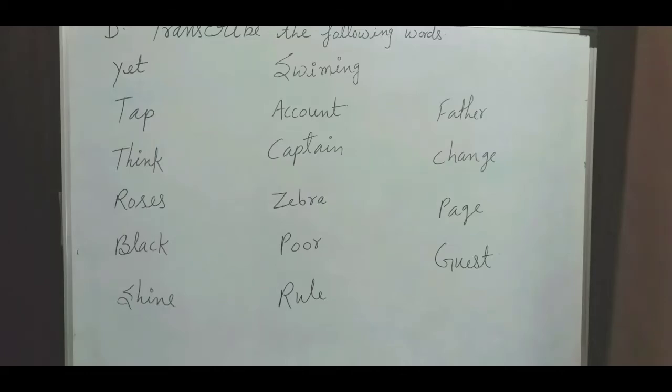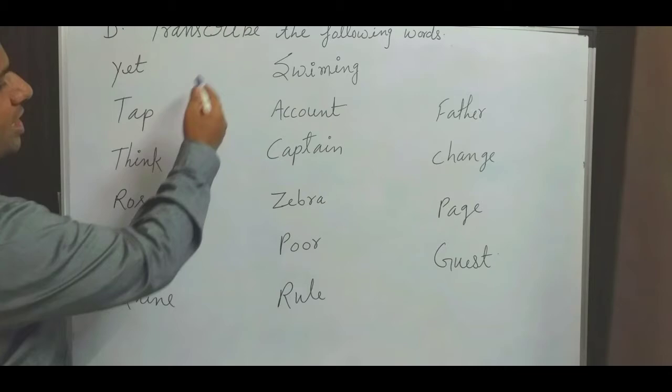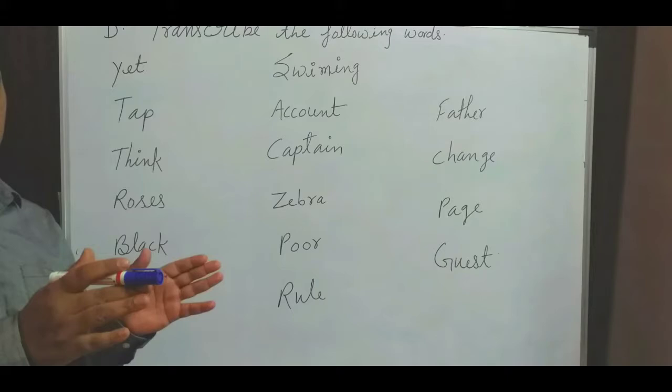Hi guys, this is the last exercise from your text, exercise number D. They say transcribe the following words. When they say transcribe, we have to use phonemic symbols to transcribe them. There are 44 symbols: 24 consonants and 20 vowels.